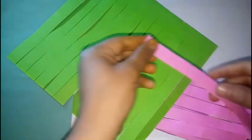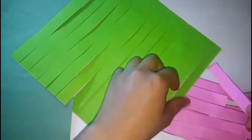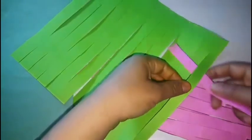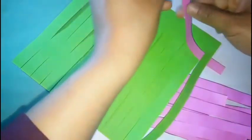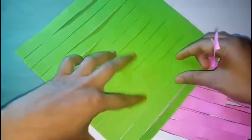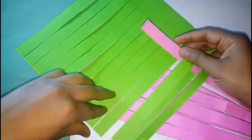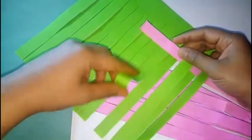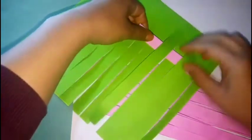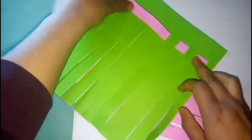Now, we will start weaving the strips. Take one of the strips and start weaving by putting it one side up and second down. This way, your paper will hold the strips. Look it carefully.